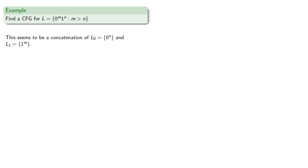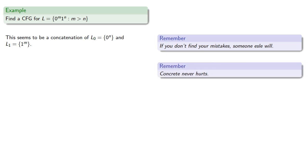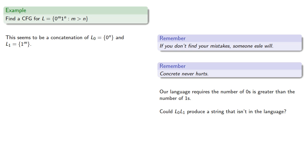At first glance, this seems to be a concatenation of L0, the language of strings of zeros, and L1, the language of strings of ones. But remember, if you don't find your mistakes, someone else will. To see if this really works — concrete never hurts — our language requires the number of zeros is greater than the number of ones. Could the concatenation produce a string that isn't in the language? After some thought, the string of three zeros is in L0, and the string of four ones is in L1, but their concatenation is not in the language.